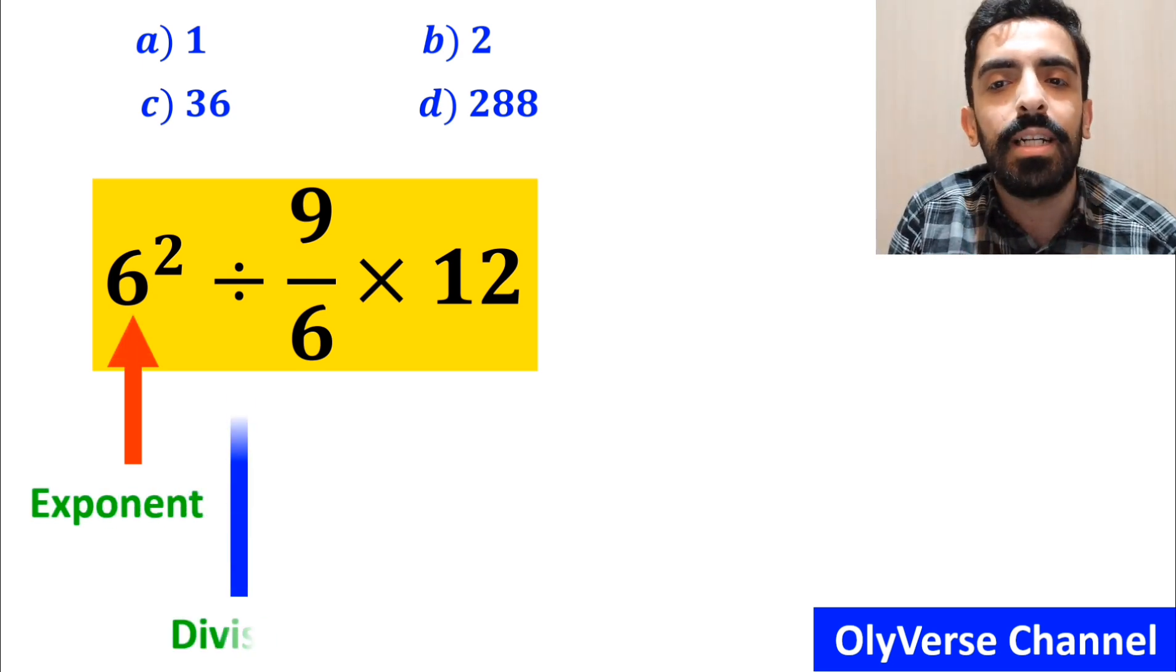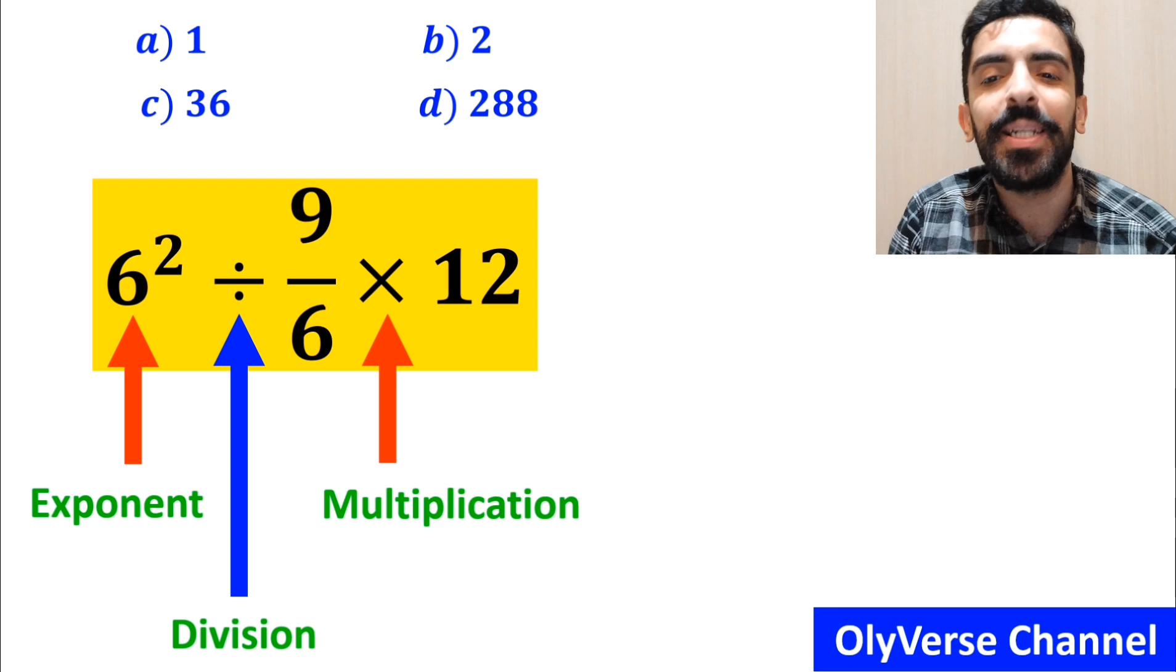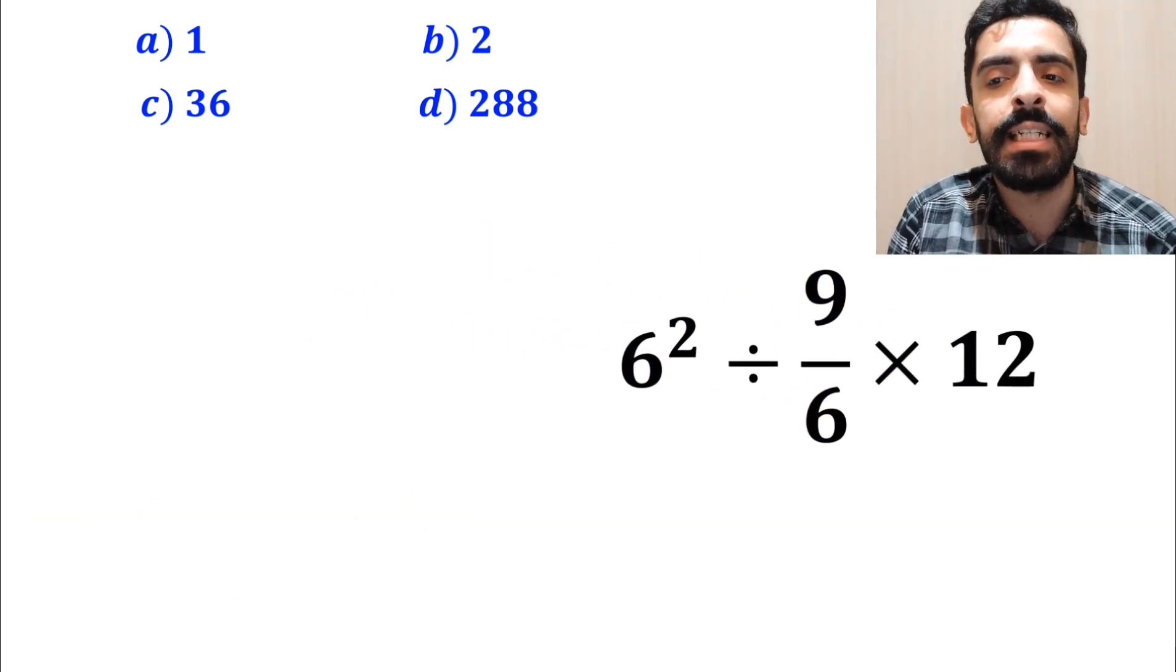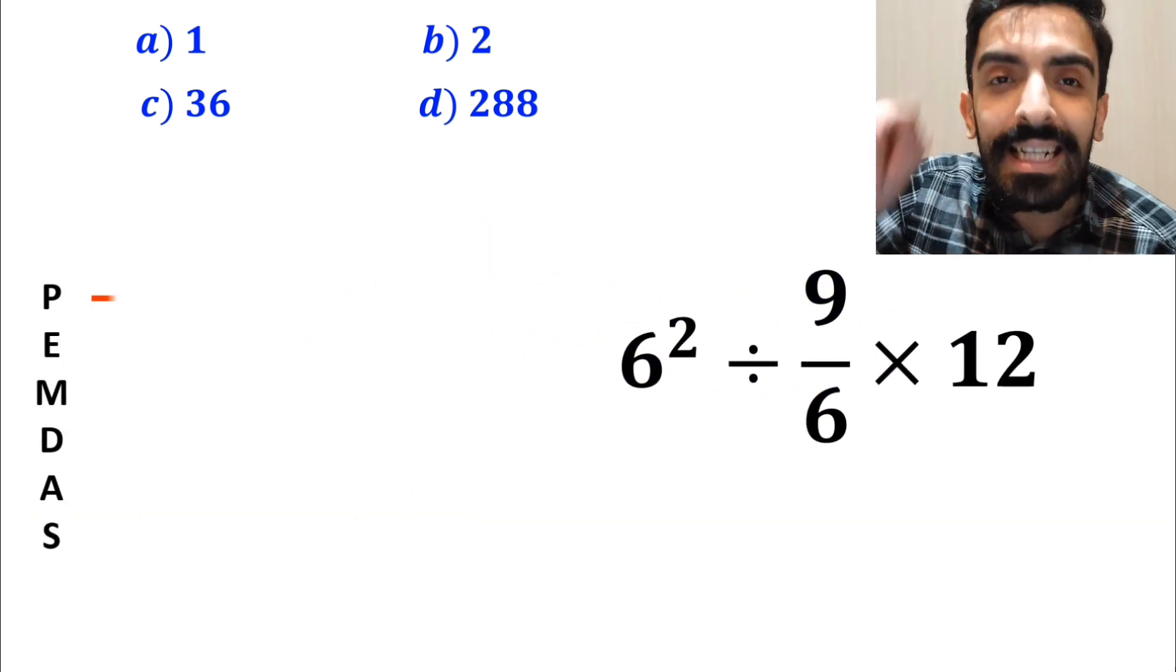first we have an exponent, then a division sign, and finally a multiplication. To solve this question, we must follow the PEMDAS rule.